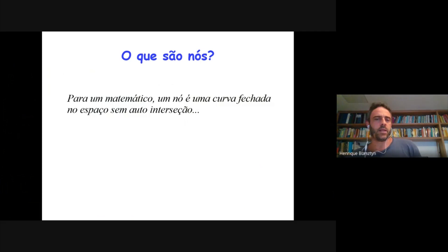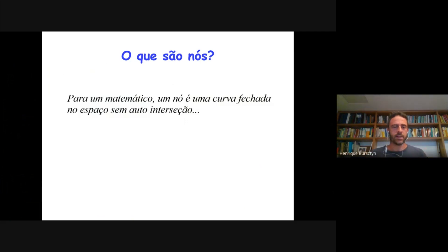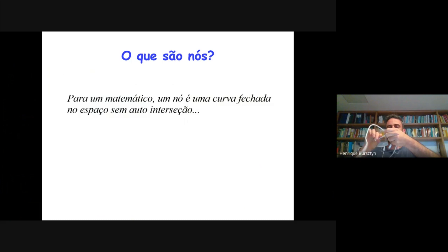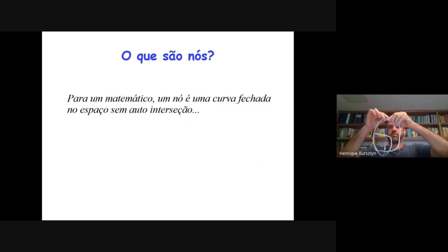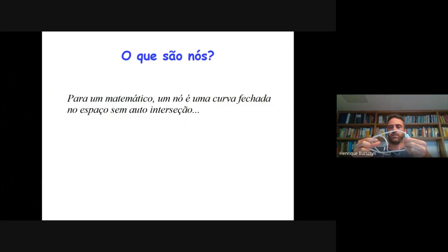Em matemática, a gente define um nó como sendo uma curva fechada no espaço sem auto-interseção, então ela não interseca nela mesma. Por exemplo, você faz um nó como você conhece com um cabinho, e como a curva é fechada, você fecha as pontas depois. Isso daqui seria um nó para mim, um nó matemático.